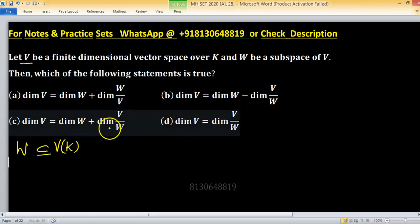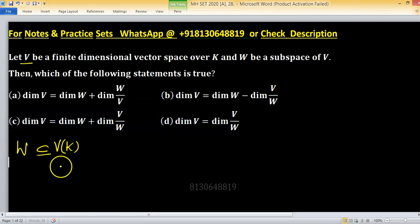The statement is about the dimension of quotient space. How will we form quotient space V over W? This is the representation of quotient space, and the subspace always comes in the denominator. Keep in mind, the subspace must be below; otherwise, the quotient space will not be well-formed.